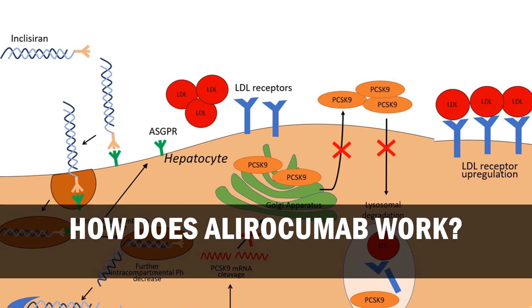Mechanism of Action: Alirocumab is a fully human IgG1 monoclonal antibody that binds and inhibits proprotein convertase subtilisin/kexin type 9, PCSK9, an enzyme found to have gain-of-function mutations in autosomal-dominant hypercholesterolemia. PCSK9 is secreted by the liver and typically binds to the LDL receptors in serum and marks them for lysosomal degradation.